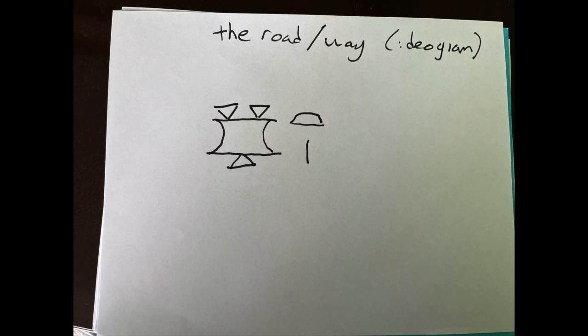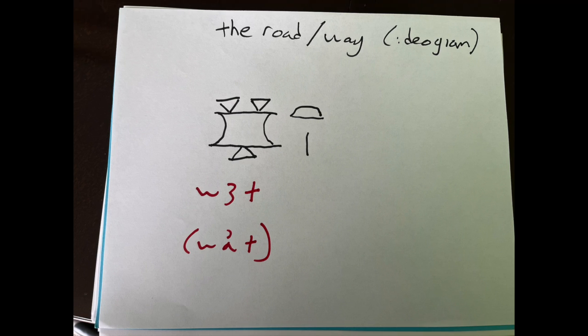Then we're going to have a t with a stroke line—the loaf—and this is wa'at, the road, and then t. So wa'at, the way or the road, very common. Actually one we've done before, so I want to make that easy.